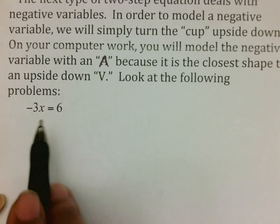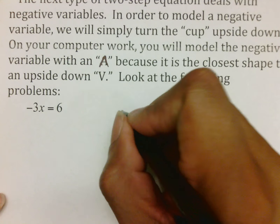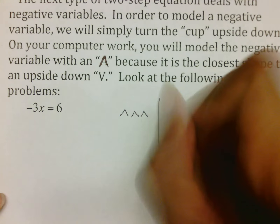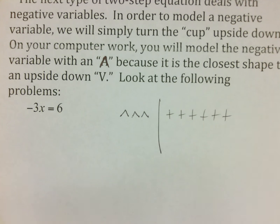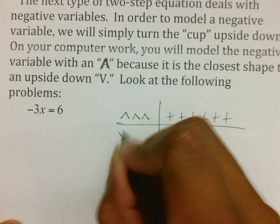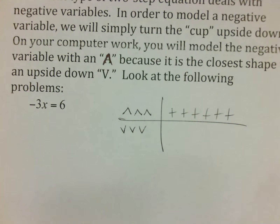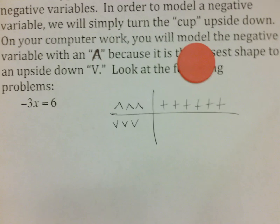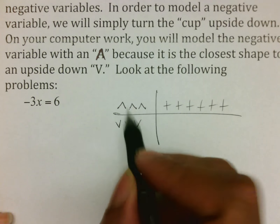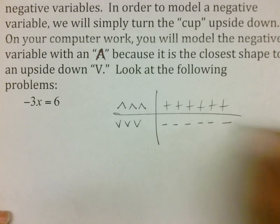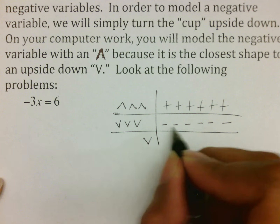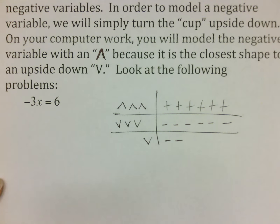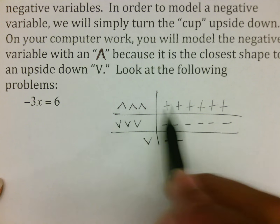Looking at the problem negative three X equals six: the first thing you're going to do is put your negative three X, which is three upside-down cups, equal to one through six. In order to actually solve it, we can't put chips into a cup that's upside down, so the first thing we have to do is flip the cups over. But algebra says if we flip the cups over, we have to flip the signs over. When you flip a plus over it becomes negative, and when you flip a negative over it becomes a plus. So we legally turn these three cups over, and now we turn those six positives into negatives, giving us negative six for three cups — meaning one cup has two negatives.